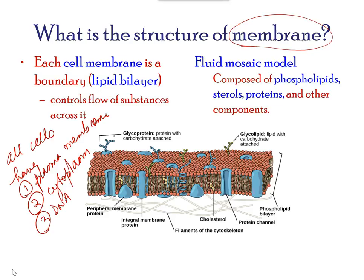Phospholipids drift within the bilayer in a dynamic manner. If you've ever seen soap bubbles floating on the surface of water, this is how the dynamic nature of the phospholipid bilayer with embedded proteins, sterols, and other components appears. The plasma membrane regulates the passage of some substances — such as organic molecules, ions, and water — preventing the passage of some to maintain internal conditions, while actively bringing in or removing others. Other compounds more passively pass across the membrane.